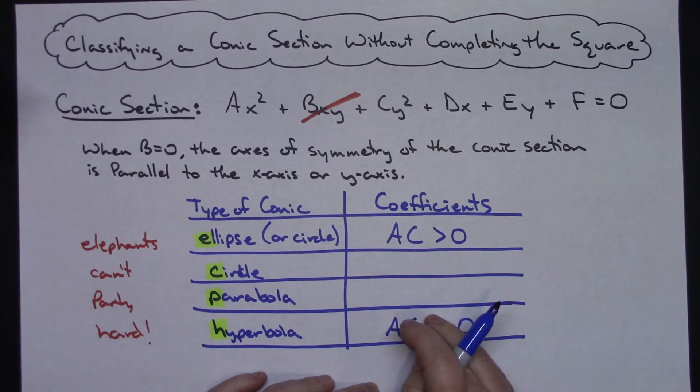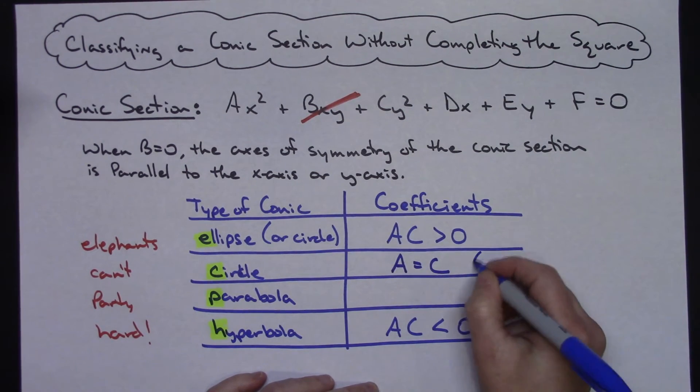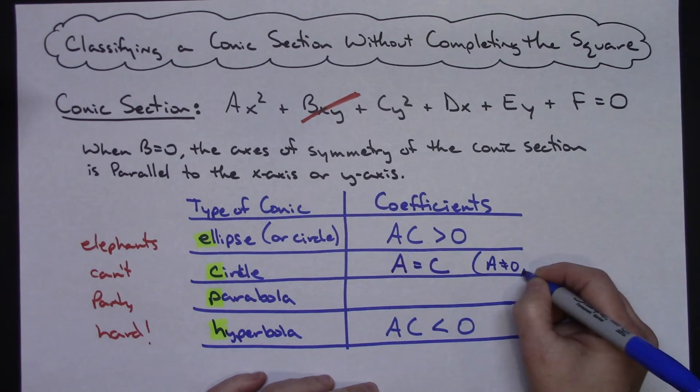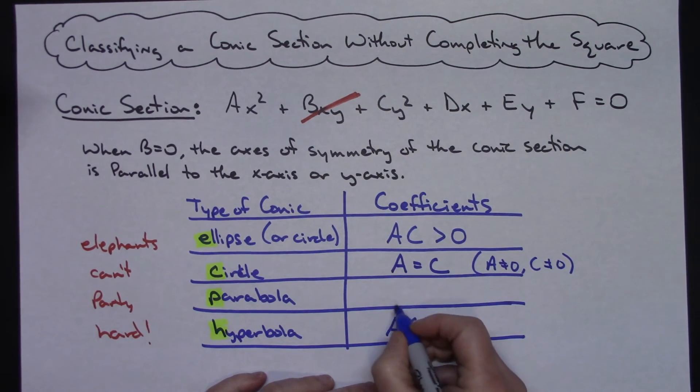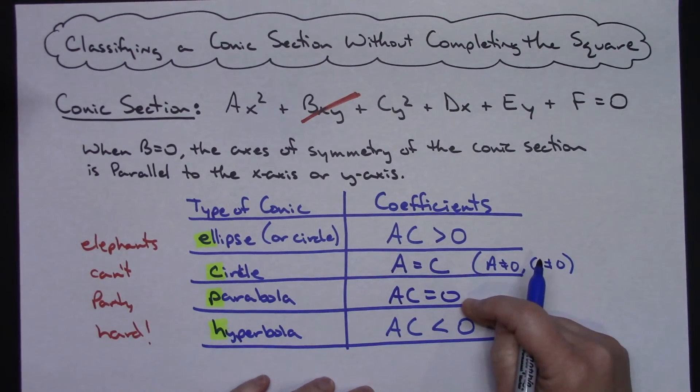For my two middle ones, those are my equal ones. On the first one, A equals C, and then of course, we do need to kind of put that in there. Obviously, A cannot equal zero, and C cannot equal zero, as an extra condition there. But A equals C, and then A times C equals zero. So these are your two equals part.